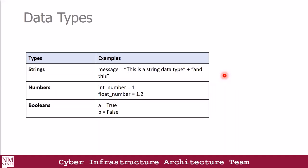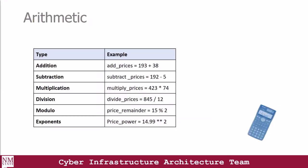Talking about data types, Python has different data types such as strings, numbers, and Booleans. For numbers, you can assign float values, which are decimals, or integer values, which are single numerical values. We can also assign Booleans, which are either true or false, and strings. We can also perform arithmetic operations, which are very easy to do using Python.